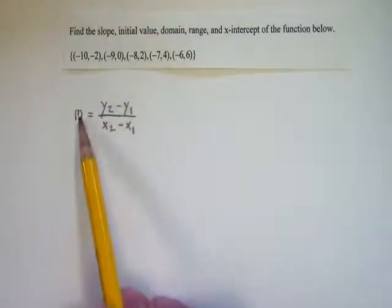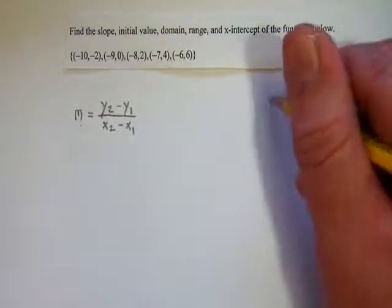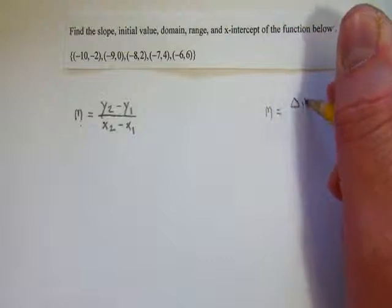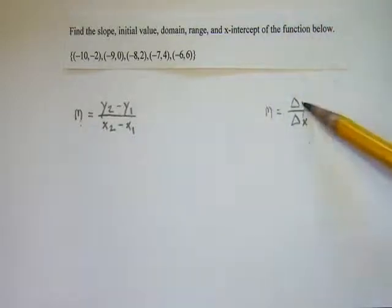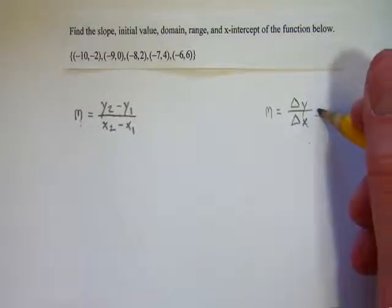So here we have our slope formula. This is just another way of saying that slope is our change in y over our change in x. That is, it's how much the y values, the range, changes when the domain changes by a certain amount.